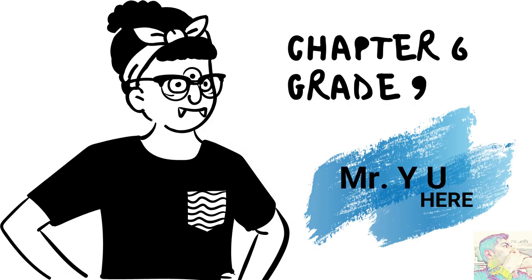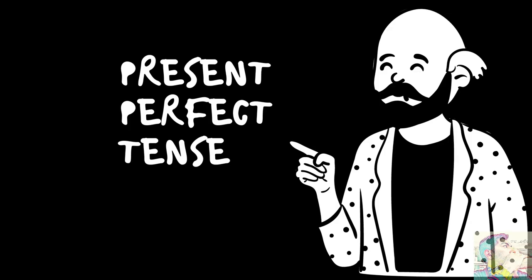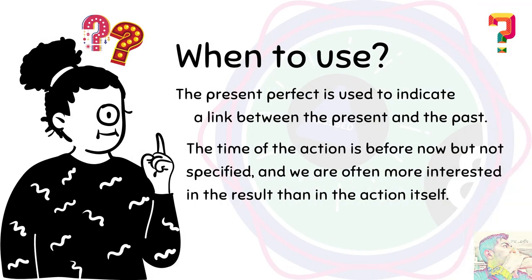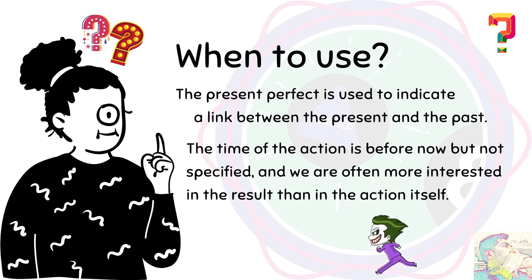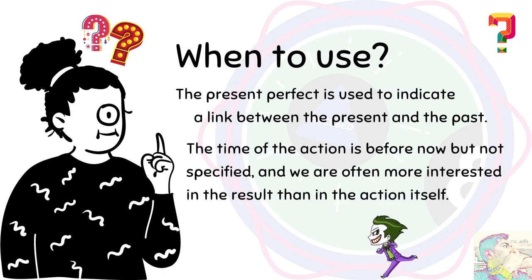Alright guys, today we are going to learn Chapter 6 and it's all about present perfect tense. The present perfect is used to indicate a link between the present and the past — digunakan untuk menjelaskan satu kegiatan yang dimulai di satu titik di masa lampau dan hasilnya terasa di masa sekarang. Ada connection between the past and the present. Waktu dimulainya biasanya tidak spesifik, tapi result-nya terasa di sekarang.